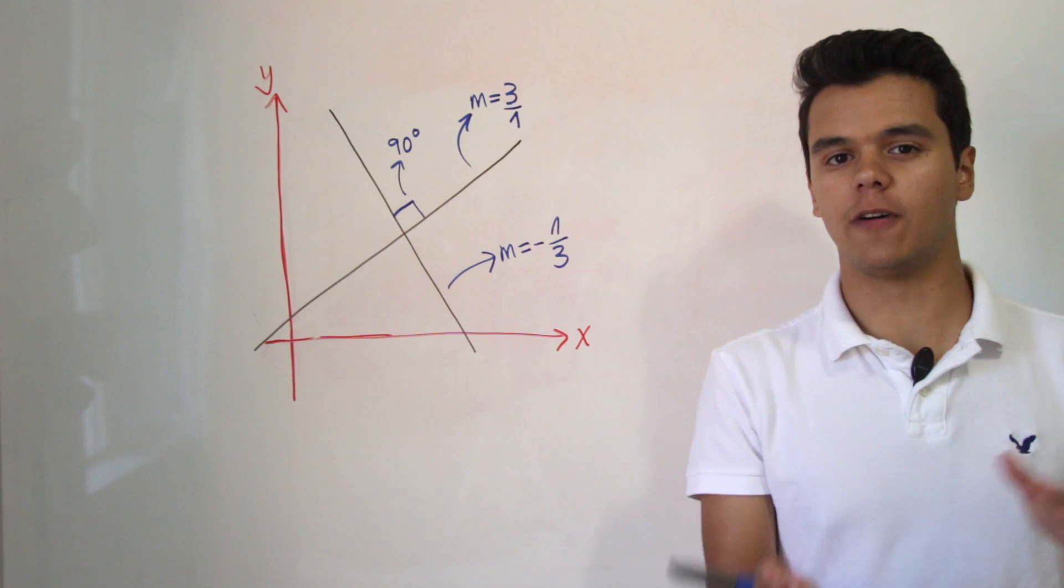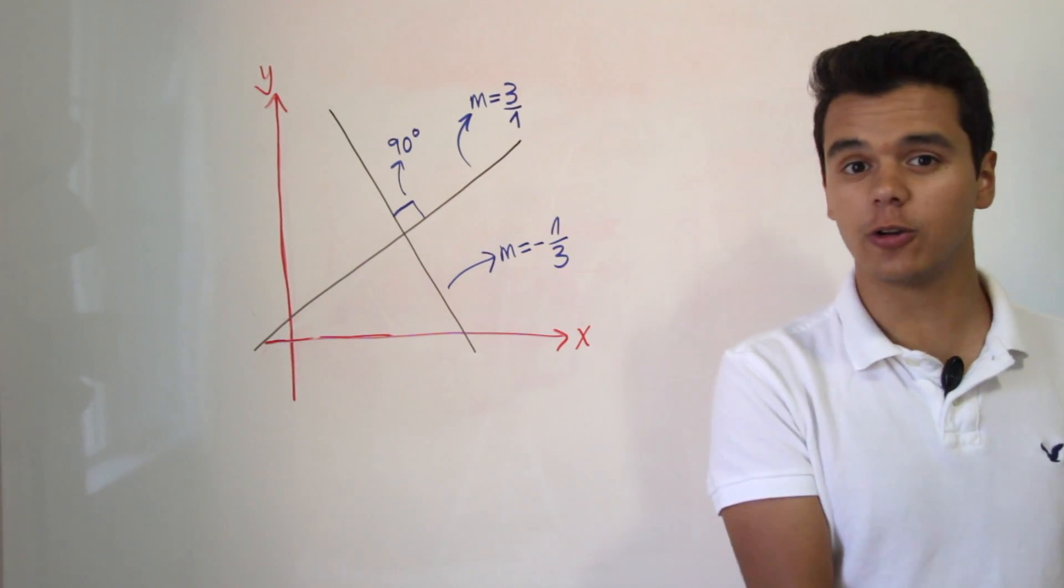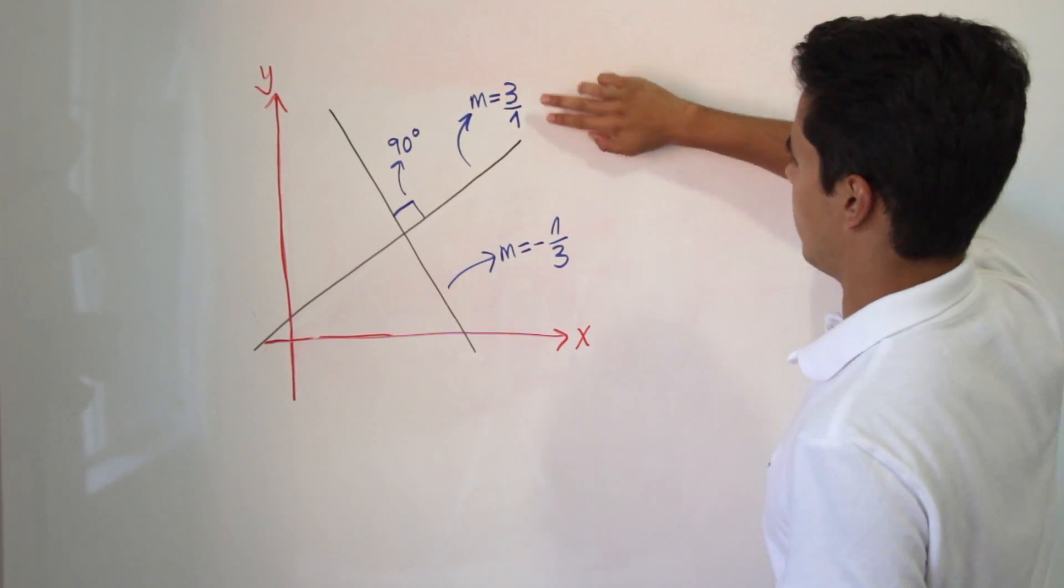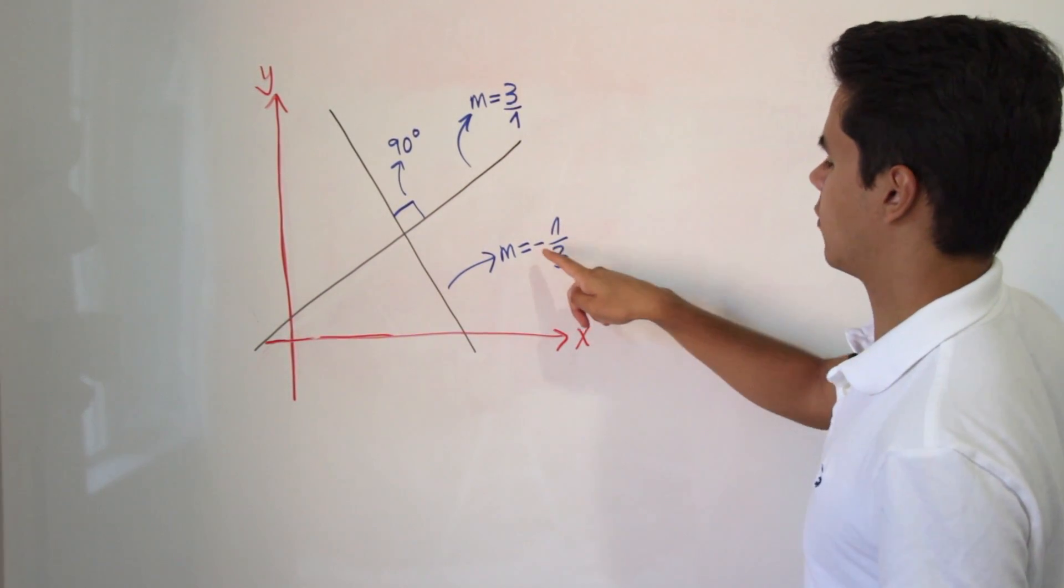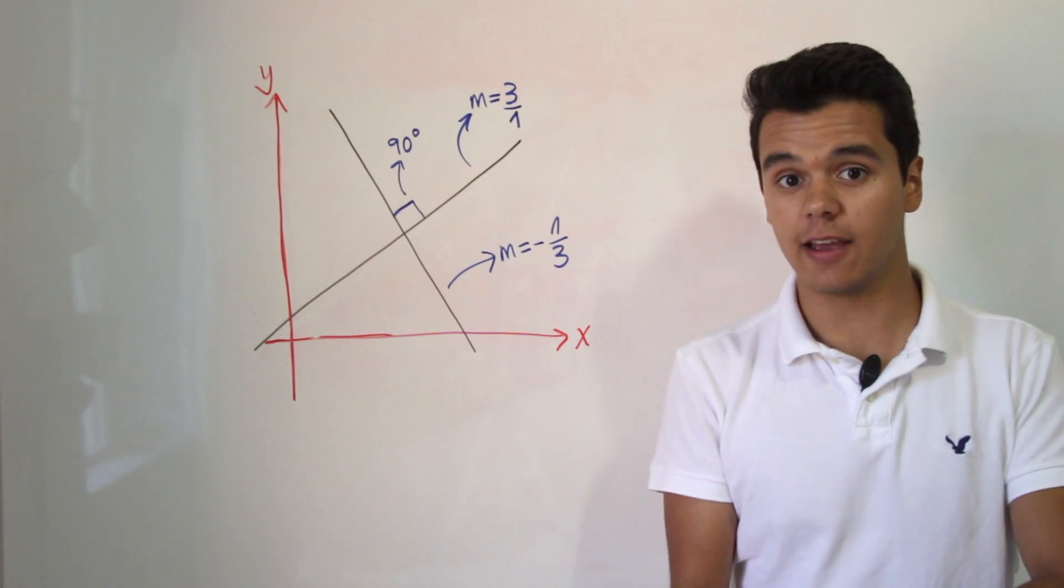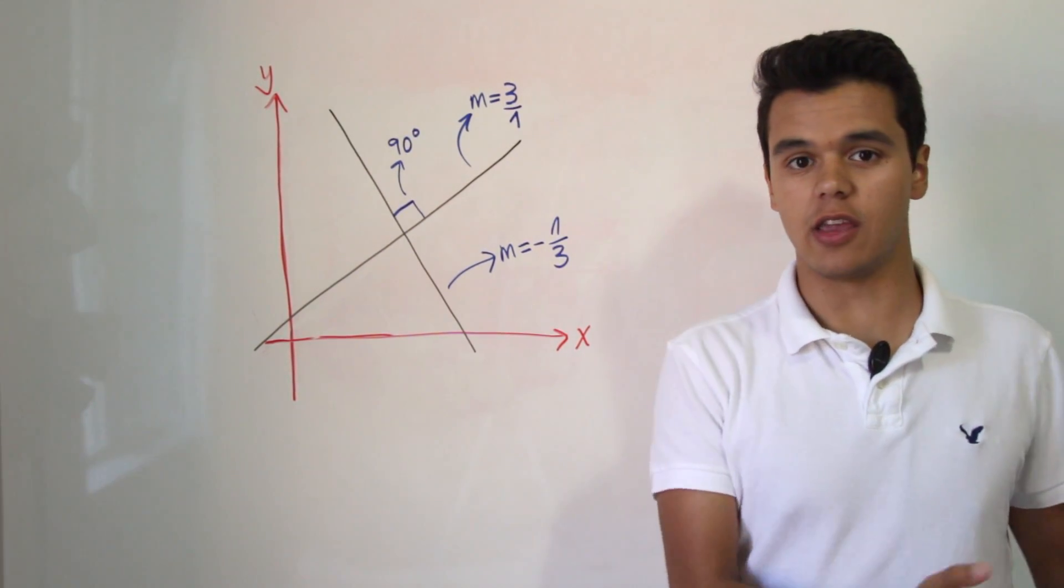So what we're gonna do to find the slope of its perpendicular line is just flip the number so it's the reciprocal and stick a negative in front of that number because it's the negative reciprocal, and it works the other way around.